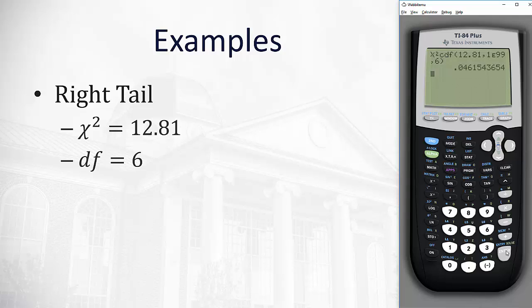Close the parentheses and hit Enter to find the p-value is 0.0462. This would be enough evidence to reject the null hypothesis if α was 0.05, but if α was 0.01, it would not be enough evidence to reject the null hypothesis.